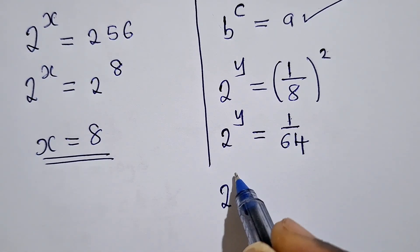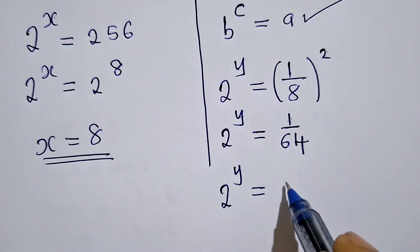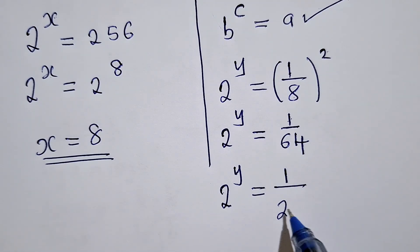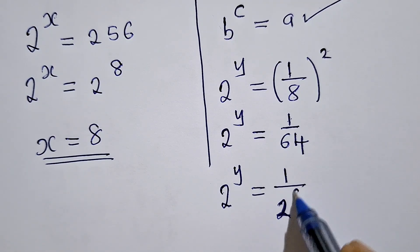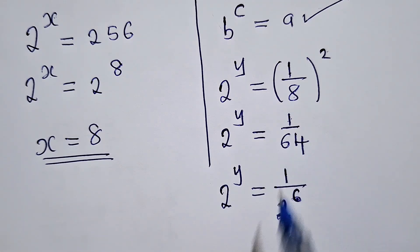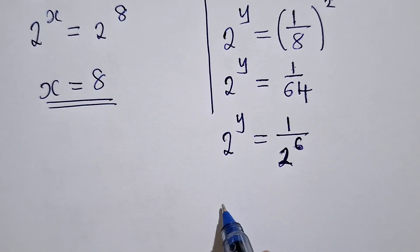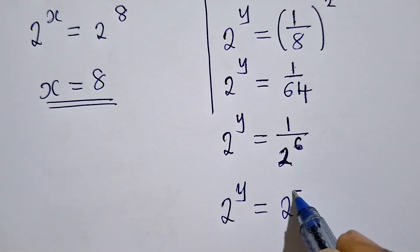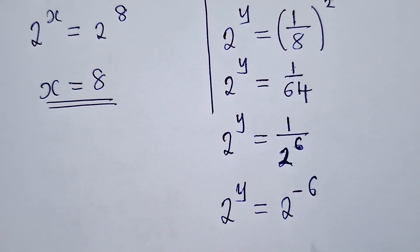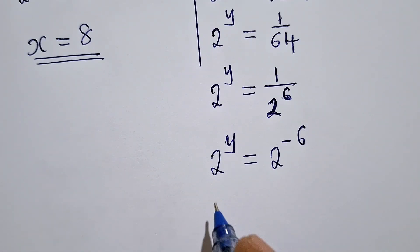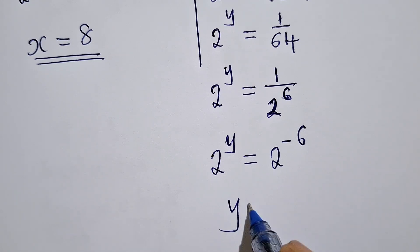And then this is 2 power y is equal to 1 over 2 power 6. So 2 power 6 will give us 64. The laws of indices. This will be 2 power negative 6. This will come on top, applying the laws of indices. So y will be equal to negative 6. So we found the value of y and x.